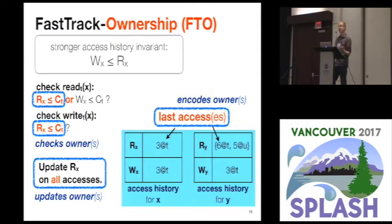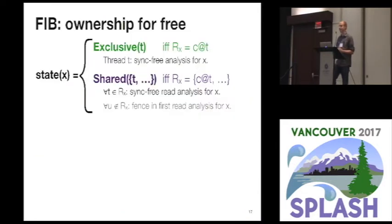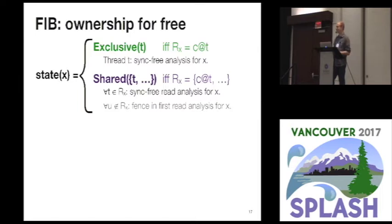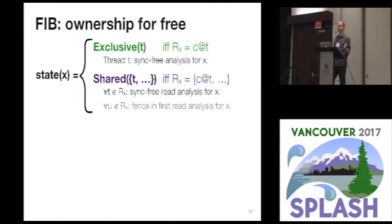FastTrack ownership can make some optimizations of its own based on this slightly stronger invariant, but with the FIB protocol we go a step further. FIB's state protocol has two states: exclusive and shared. An access history is in exclusive mode when there is a single last read, or last access. The thread that performed that last read is the exclusive owner of this access history, and this exclusive state grants it permission to perform any analysis using this access history completely free of synchronization. Any other thread wishing to perform analysis has to go through other channels. For example, in an access history where the last access is by thread U at time five, this is exclusive to thread U.